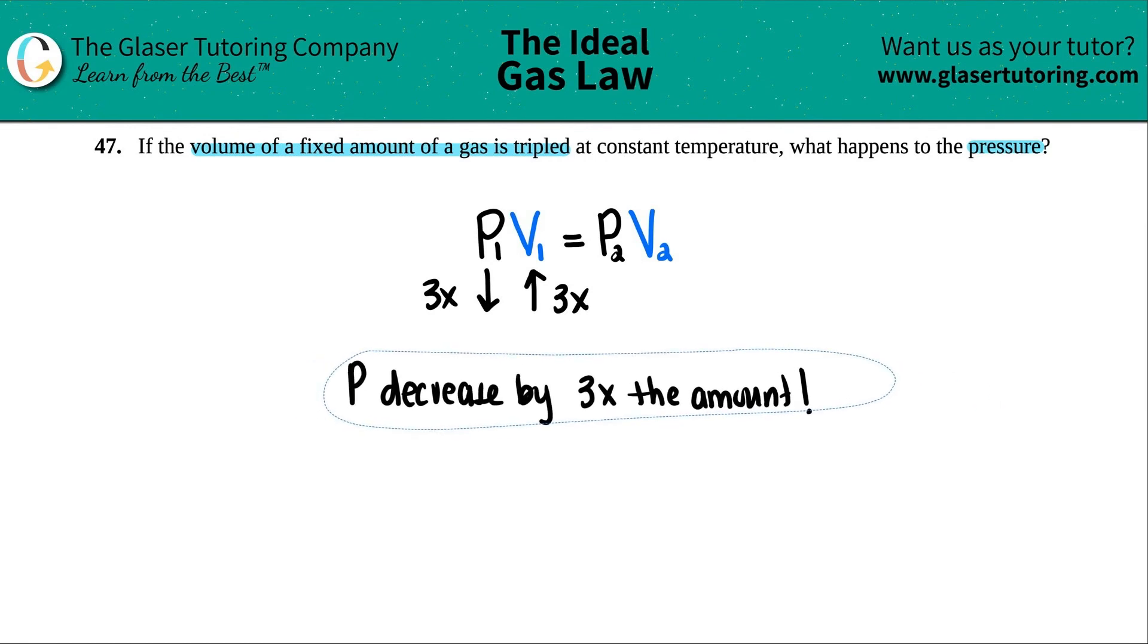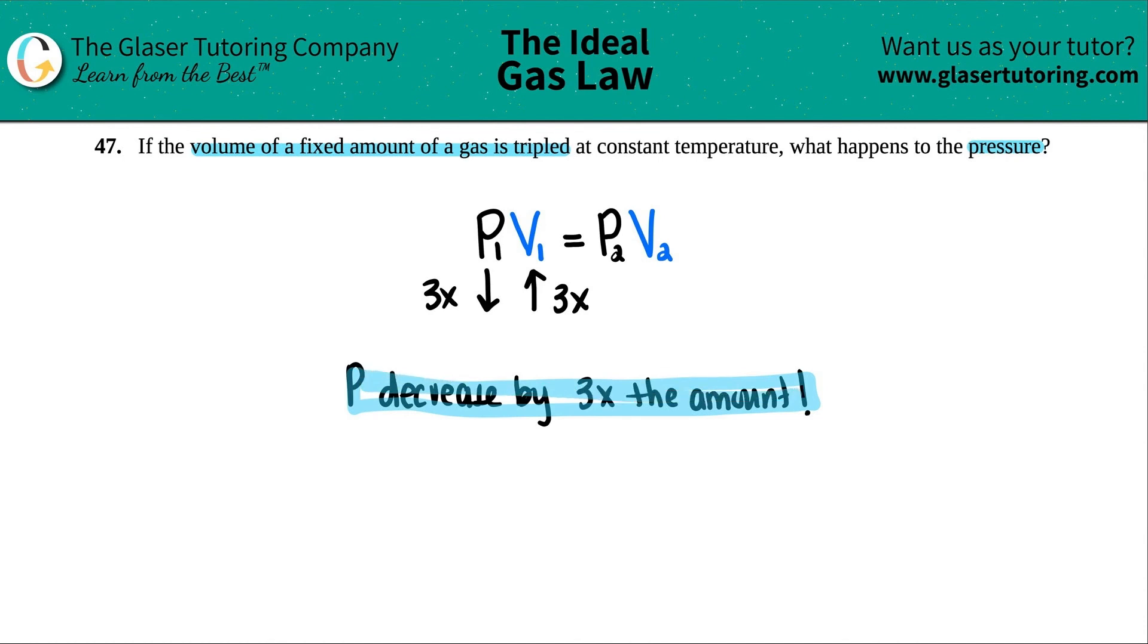So this was just basically spotting out what pressure and volume were. Were they inversely or indirectly related, or was it a direct relationship? Pressure and volume is always inversely related or indirectly related. If one goes up, the other one goes down.